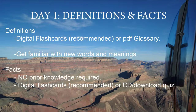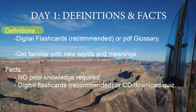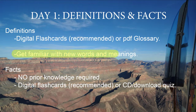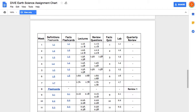Now let's go through the four-day schedule in your assignment chart for completing a week of Diverse Science. First up on Day 1 are definitions and facts. We'll talk about your definitions for the week — there are digital flashcards on your assignment chart, and that's what we recommend using. It's an online activity, but it is optional; you can use the PDF glossary provided with your course instead. The purpose of doing definitions first is to get you familiar with new words and their meanings before you watch a lecture.